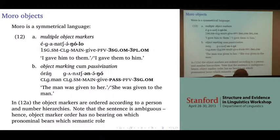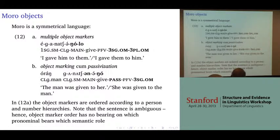In 12a, we see both of the objects being realized as object markers, again with the ambiguity. In 12b, we see one of the arguments passivizing and the other being realized as an object marker, and again being ambiguous.